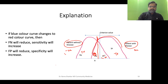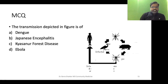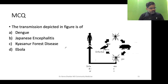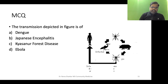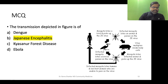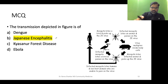Next question: the transmission depicted in the figure is of which disease — Dengue, Japanese encephalitis, Kyasanur Forest disease, or Ebola? We have a mosquito, an amplifier host (pig), again a mosquito, a bird, and humans getting accidentally infected. The infected mosquito bites an animal and passes the virus; the virus multiplies, the mosquito bites the infected animal again, picks up the virus, and it circulates. Accidentally, the mosquito can bite humans causing Japanese encephalitis. This was also asked in NEET PG 2020.